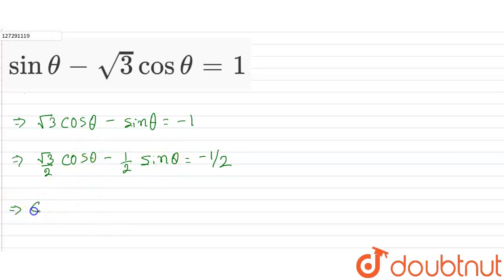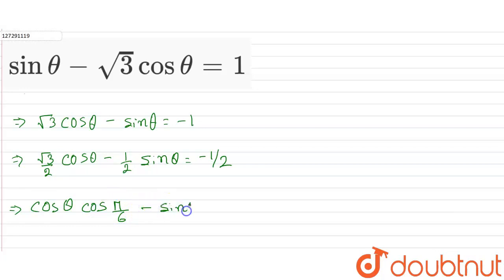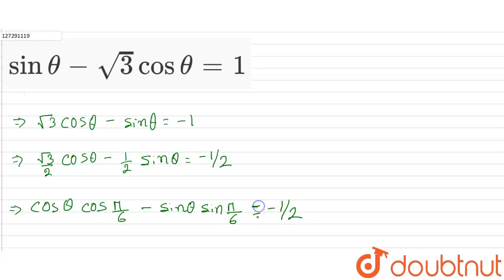Now, root 3 by 2 is the value of cos π by 6. In the same way, minus sin θ — this half value — sin π by 6 is equal to 1 by 2. So sin π by 6 is equal to minus 1 by 2. We have to write it.